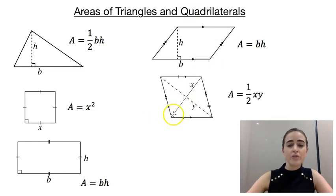Next up, we've got a rhombus. So if we know the lengths of the diagonals of a rhombus, we can find the area by going half times x times y, where x and y are those lengths of the diagonals. So that's one way you can do it.